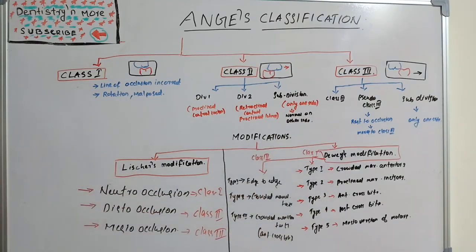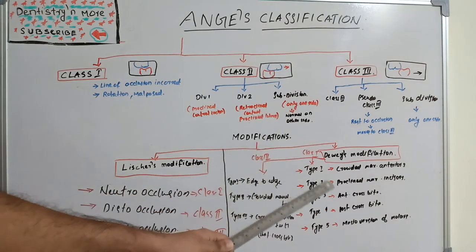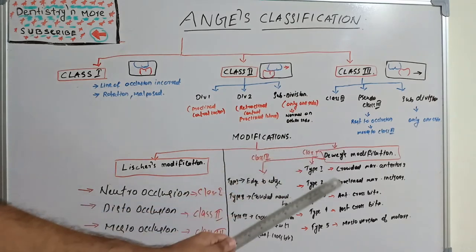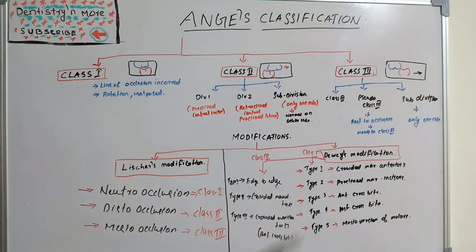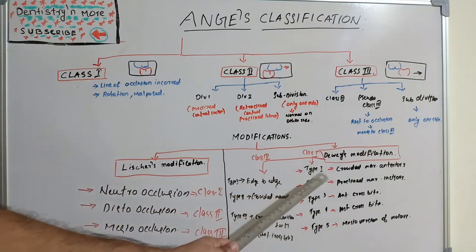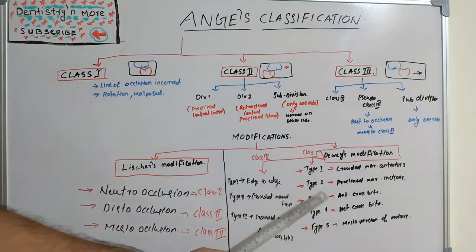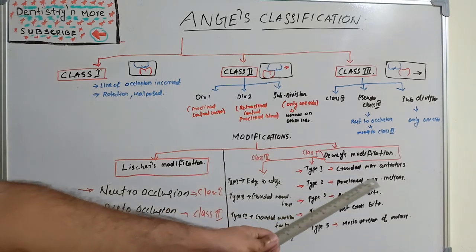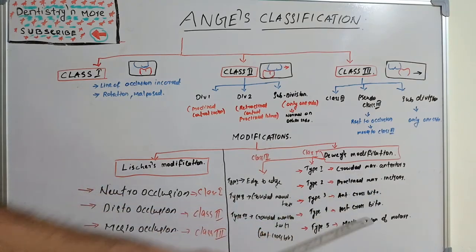Dewey's modification applies to both Class 1 and Class 3, but not Class 2. Class 1 has 5 types and Class 3 has 3 types. For Class 1: Type 1 is crowded maxillary anteriors, Type 2 is proclined maxillary incisors, Type 3 is anterior crossbite, Type 4 is posterior crossbite, and Type 5 is mesioversion of molars. These are the 5 types of Dewey's modification: crowding, proclination, anterior and posterior crossbite.